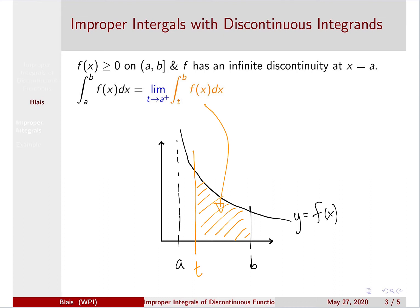And then, once we have that area, that integral, we plug in the endpoints and we'll get an expression involving t. We can then let t approach a from the right, and that will give us the exact area that we seek below the curve.